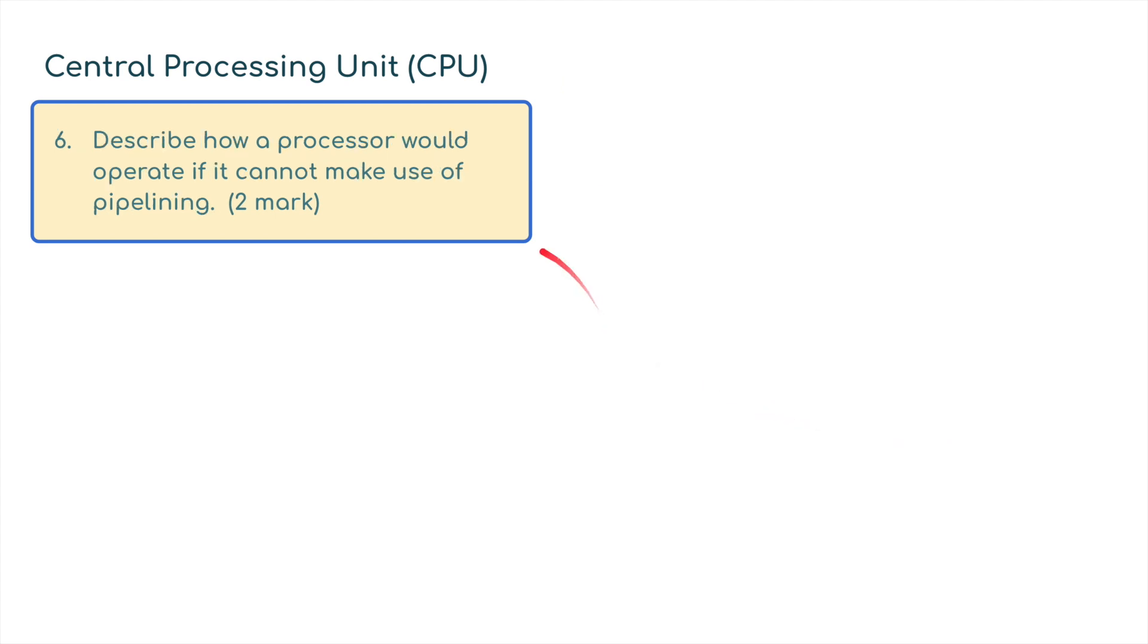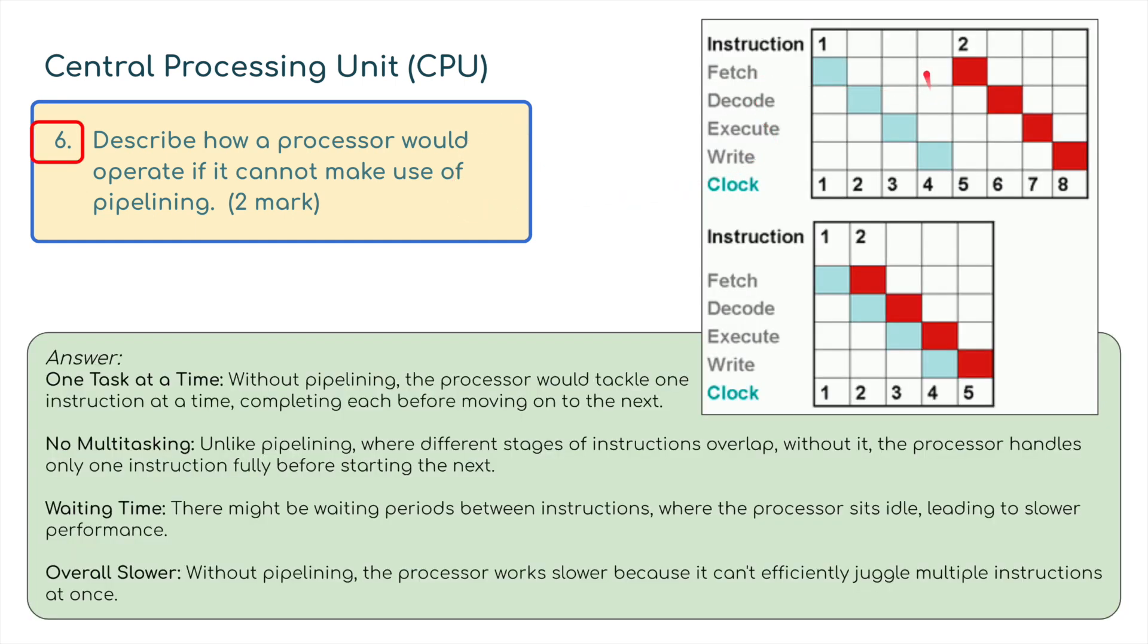Describe how a processor would operate if it cannot make use of pipelining. What is pipelining? Without pipelining, it only does one task at a time. It's fetching, then decoding, then executing, then writing, and then it waits for that task to finish before it starts the new one. Whereas using pipelining, we can start one task, and then whilst we're decoding we can fetch another task and so on and so forth.